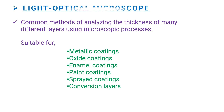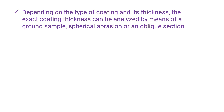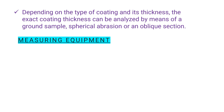The next testing methods are destructive measuring techniques. The first is the light optical microscope — a common method of analyzing the thickness of many different layers using microscopic processes. It is suitable for metallic coatings, oxide coatings, enamel coatings, paint, sprayed coatings, and conversion layers. Depending on the type of coating and its thickness, the exact coating thickness can be analyzed by means of a ground sample, spherical abrasion, or an oblique section.